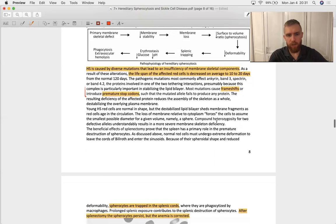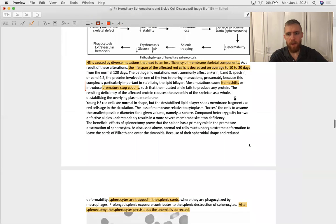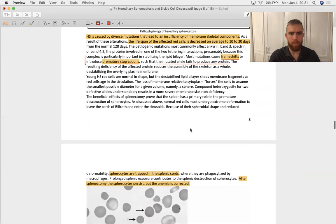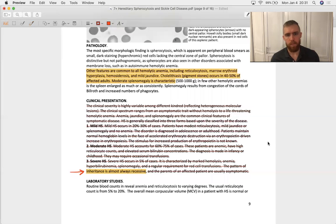Again these are usually autosomal dominant unless it is the very severe type which tends to be autosomal recessive. And what kind of mutations are we talking about? Frame shifts and premature stop codons such that the mutated allele fails to produce any protein at all, so total loss of function. Clinical presentation: again you'll have splenomegaly every single time, you'll have cholelithiasis almost every single time, scleral icterus very common first presentation.